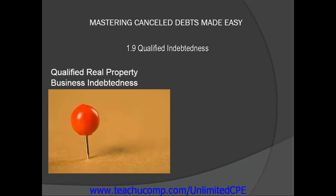Qualified Real Property Business Indebtedness is a provision that allows an individual to exclude qualified canceled debt from income. However, certain rules do apply. In order to qualify for Real Property Business Indebtedness, all of the following three conditions must be met.